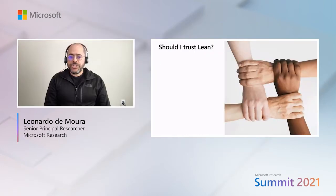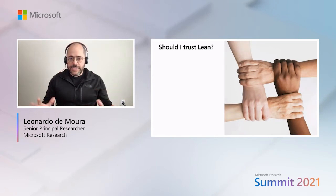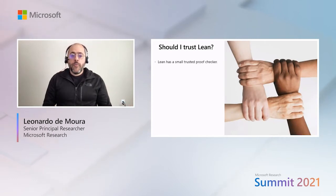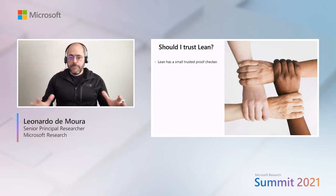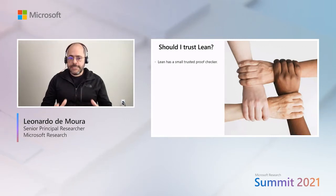The recurrent question is: should I trust Lean? Lean is a big piece of code, and like any big piece of software, it contains bugs. Are the theorems proved in Lean really correct? Well, Lean has a small trusted proof checker. Lean may be big, but this proof checker — the Lean kernel — is a small piece of code, much smaller than Lean itself.